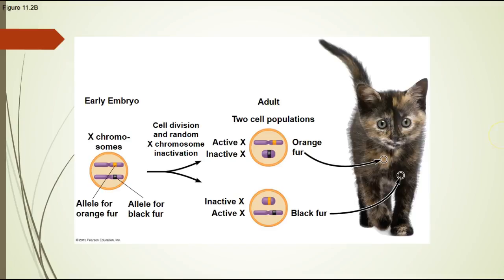You can see patches of orange fur and patches of black fur depending on which X chromosome gets inactivated. This is why tortoiseshell and calico cats are usually only female — they have two X chromosomes, one of which can be inactivated in different parts of the body. Males only have one X chromosome, so they won't have that patchiness.